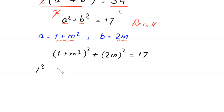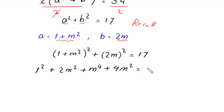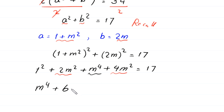Expanding (1 plus m squared) squared gives 1 plus 2m squared plus m to the power 4. And (2m) squared gives 4m squared. Combining: m to the power 4 plus 2m squared plus 4m squared plus 1 equals 17, which simplifies to m to the power 4 plus 6m squared plus 1 minus 17 equals 0.